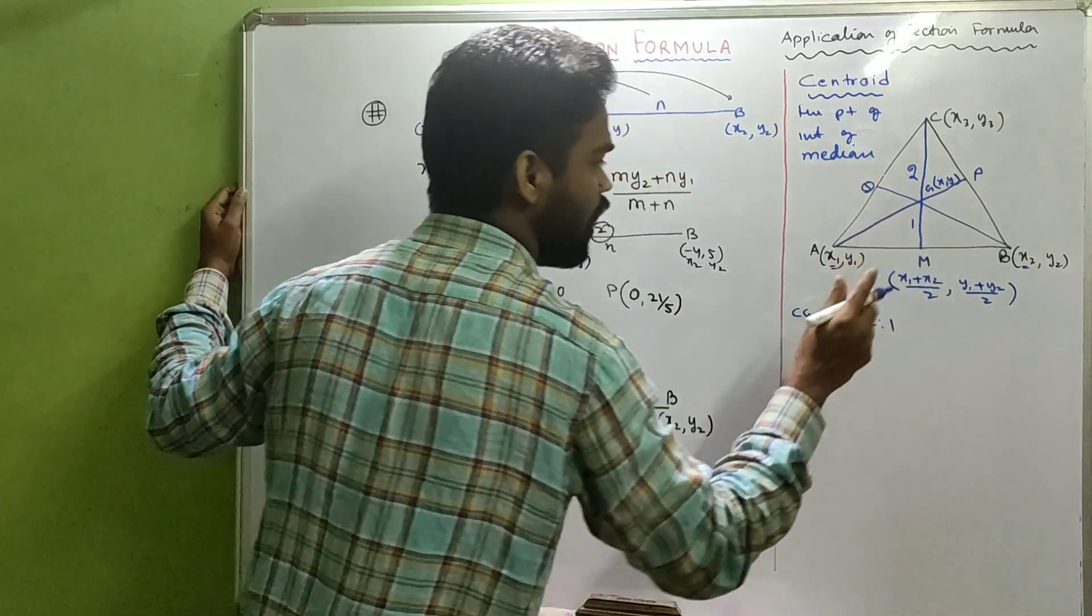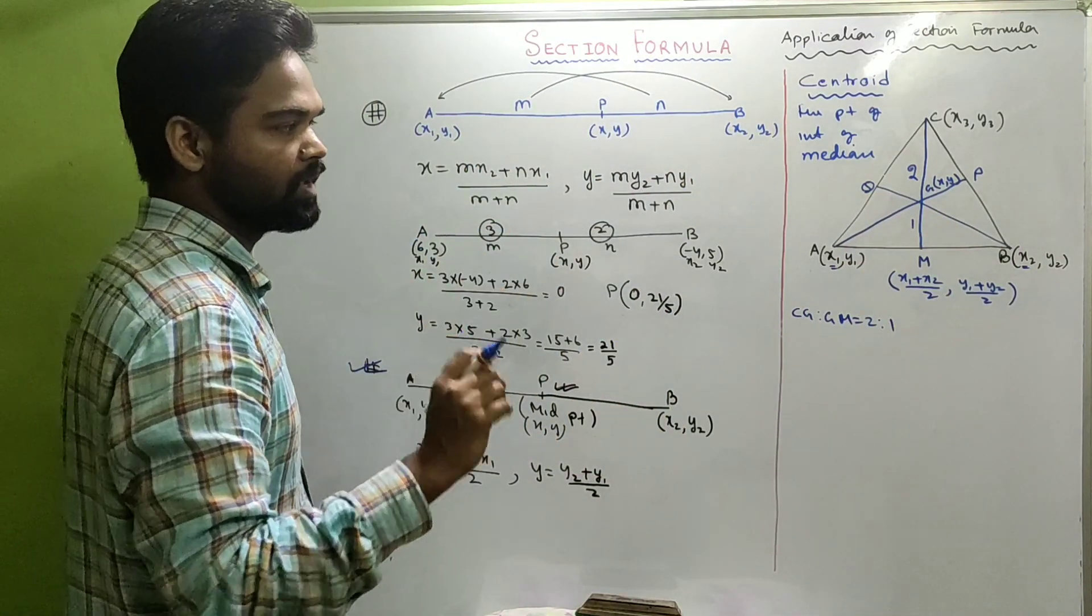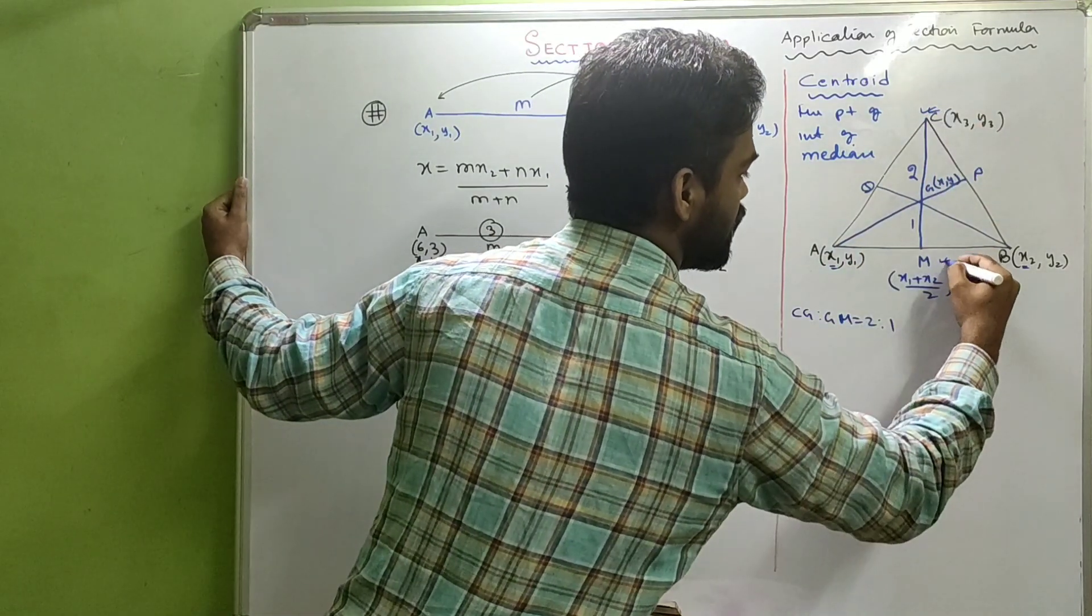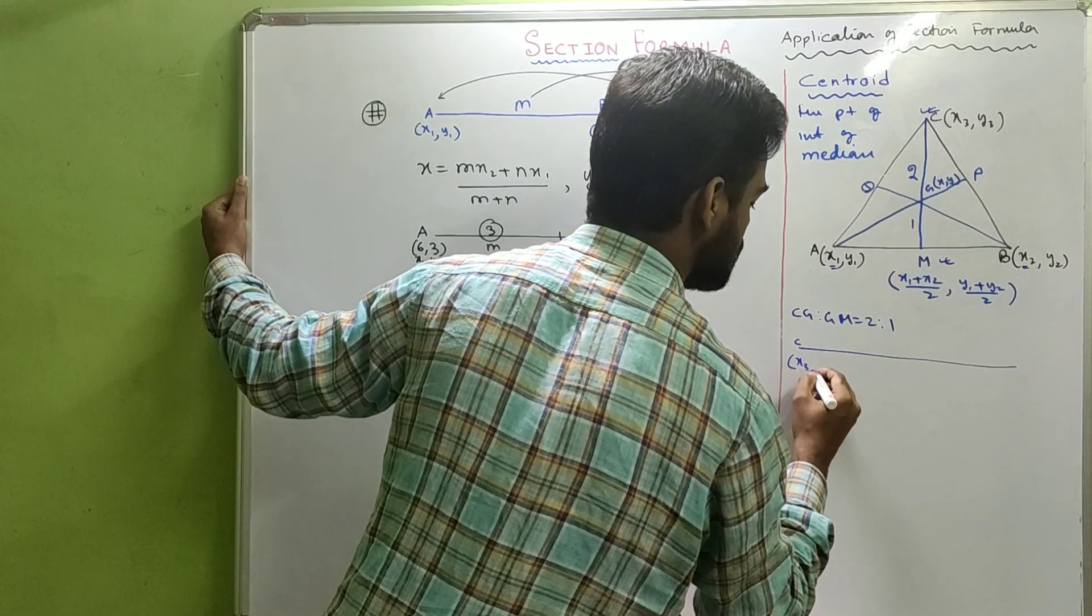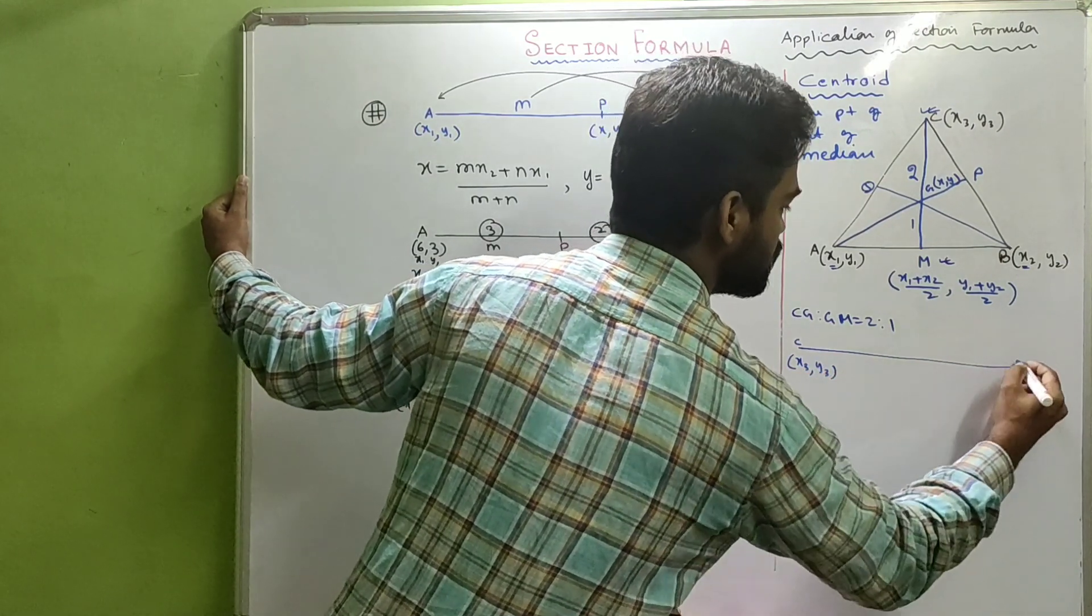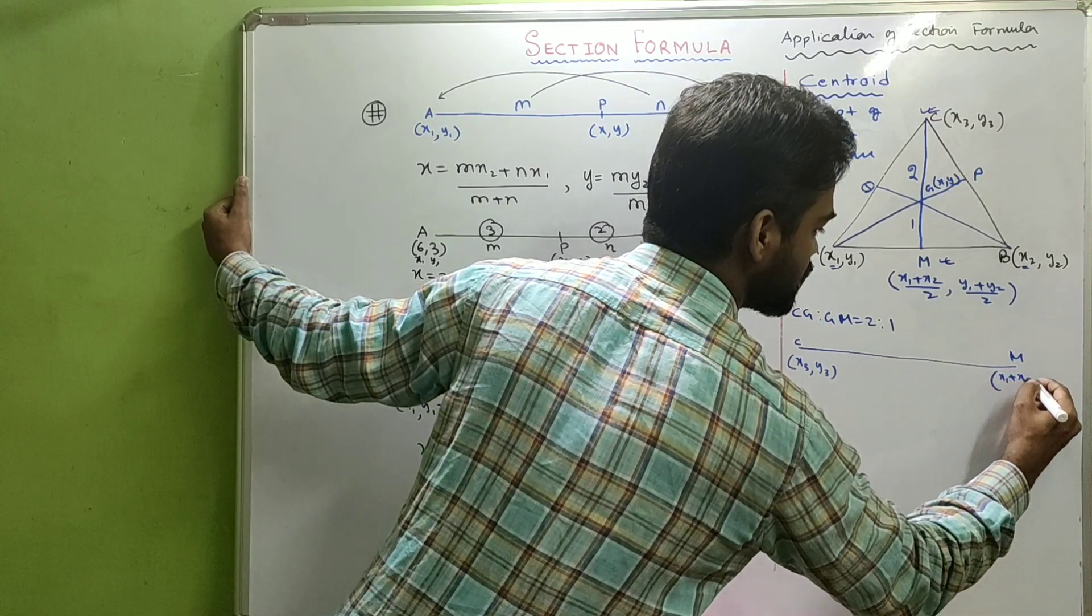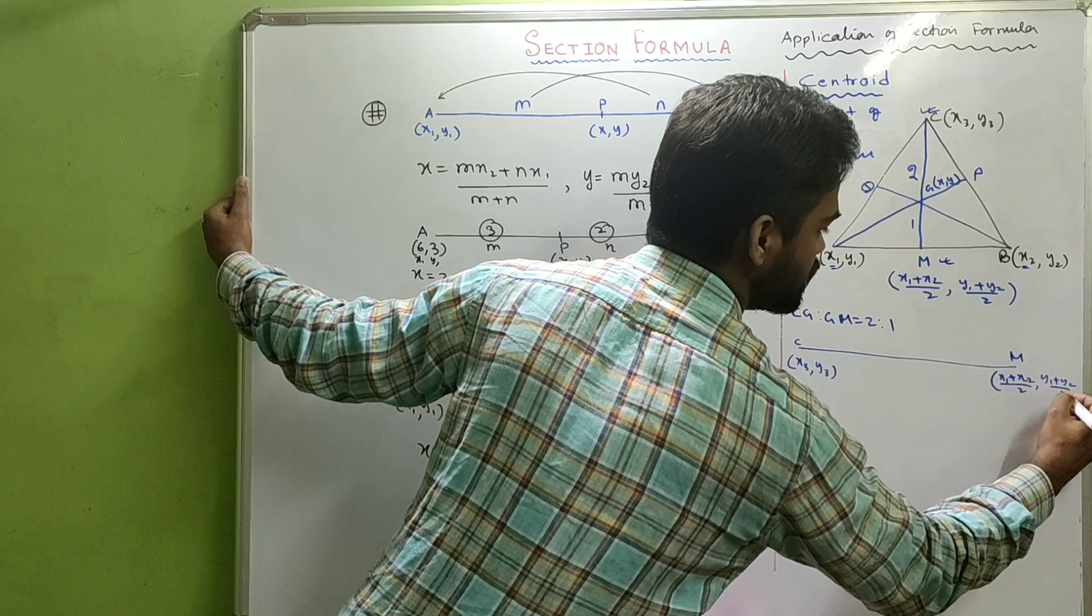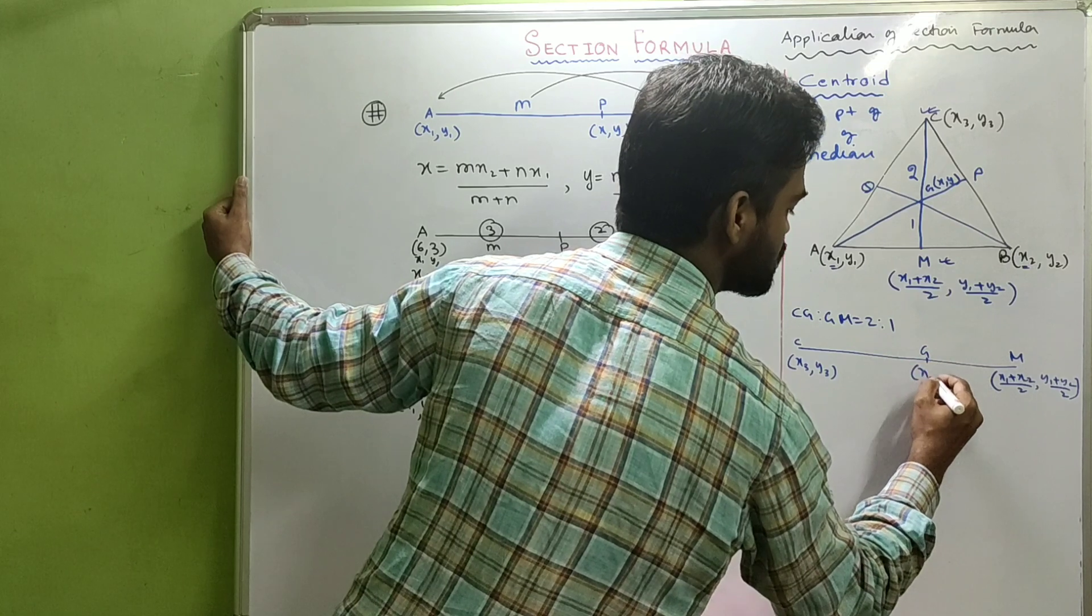Now, CM is your median. We know the fact: CG to GM is 2 is to 1. This ratio is 2 is to 1. How it came 2 is to 1, I'll make a separate video to show that. Now, look carefully. If you look at CM, C is your (X3, Y3), M is your (X1 plus X2 by 2, Y1 plus Y2 by 2), and the centroid G is (X, Y), the ratio is 2 is to 1.